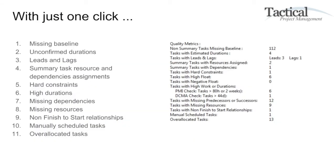With just one click, you'll find out if you're missing a baseline, if you have unconfirmed durations, if you have too many leads or lags, if you're assigning resources at the summary task level, if there are hard constraints, high durations, missing dependencies, missing resources, non-finish-to-start relationships, manually scheduled tasks, and over-allocated tasks. The power of this is it's all done with the click of a button.